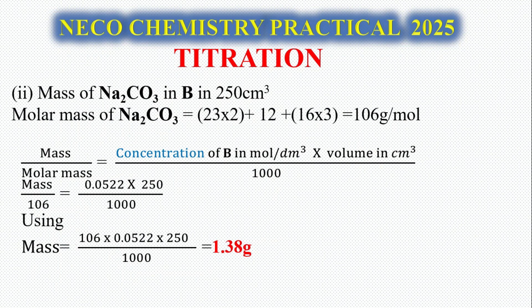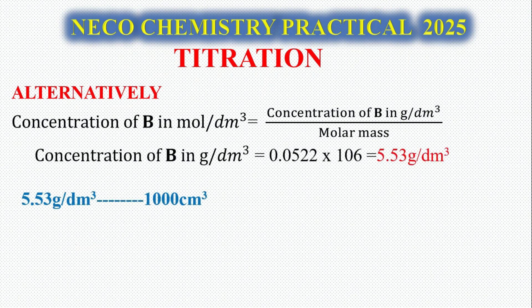Concentration of B in mol per dm³: If you use CaVa/Na = CbVb/Nb, look at all our parameters, then substitute correctly, you have your CB to be 0.0522 mol per dm³. Remember, three significant figures. Question number 2: Mass of Na2CO3 in 250 cm³. Our molar mass is 106. We use N = CV/1000. Of course, N = mass/molar mass. My mass is what I'm looking for, molar mass is 106, concentration is 0.0522, volume is 250. When I substitute and make mass the subject, I get 1.38 grams.